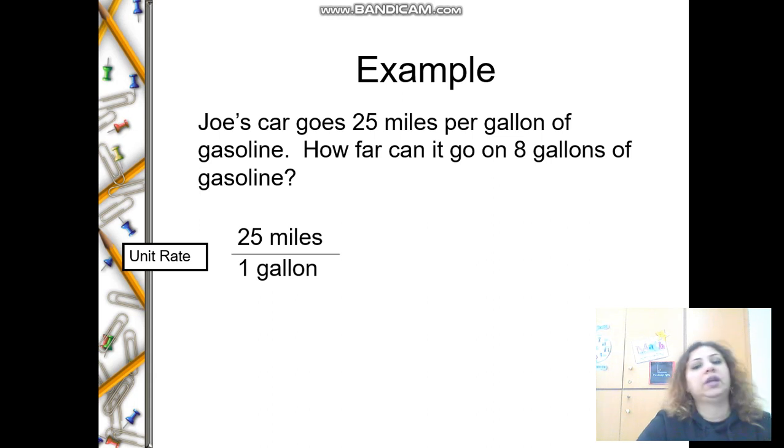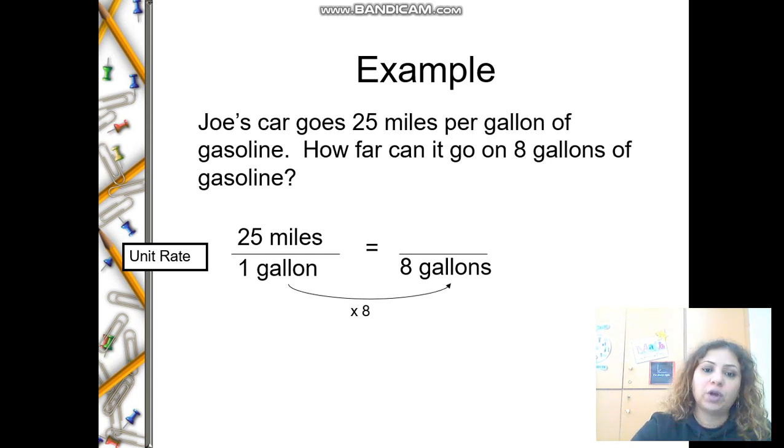He goes 25 miles using one gallon. What if there are eight gallons? The same term here in this ratio is the number of miles. So I'm going to multiply the denominators: one times eight. And I'm going to multiply the numerators: 25 also by eight.